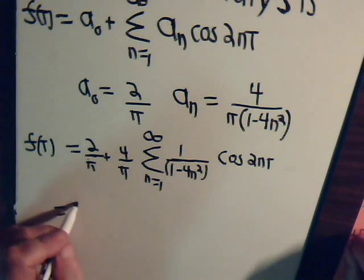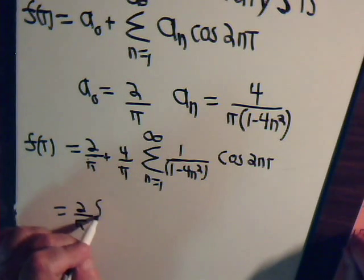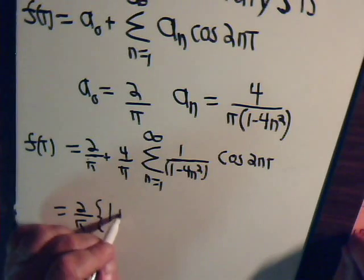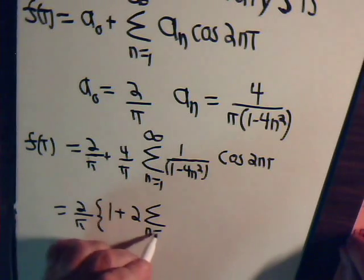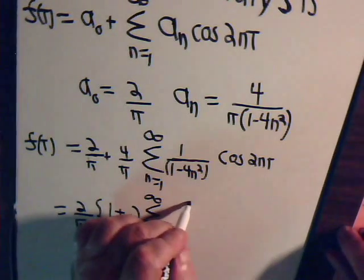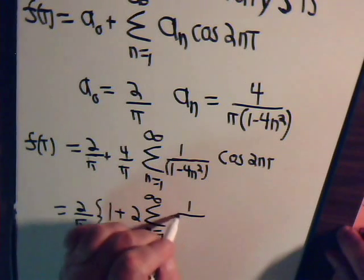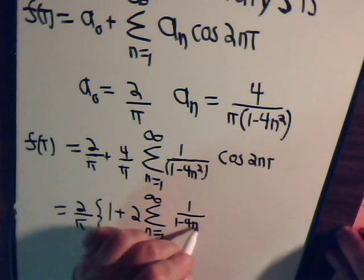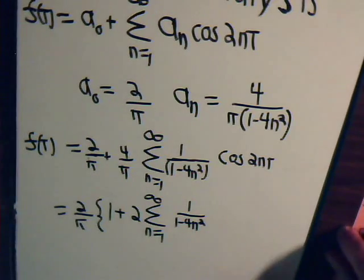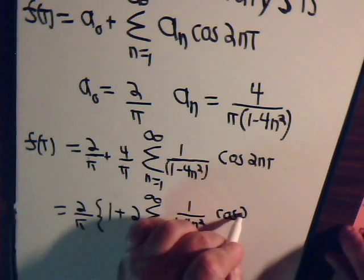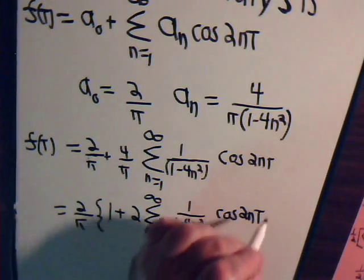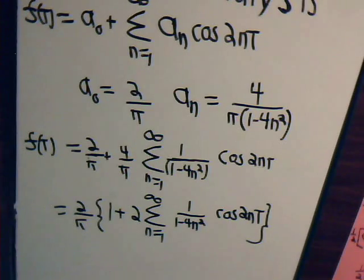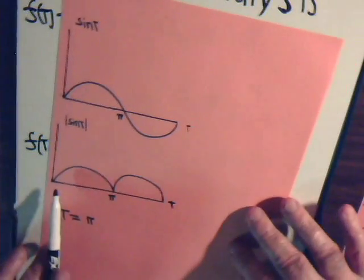If we want, we can factor the two over pi out. So two over pi times one plus two times the sum from n equals one to infinity of one over one minus four n squared times the cosine two n t. And that is how we would express this function in a Fourier series.